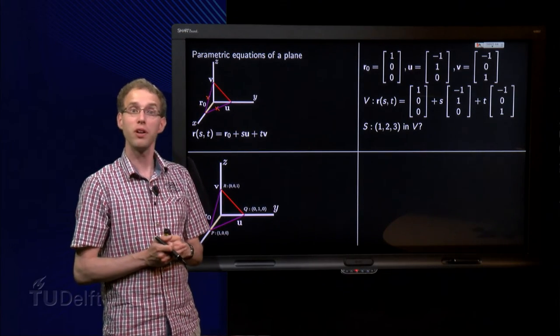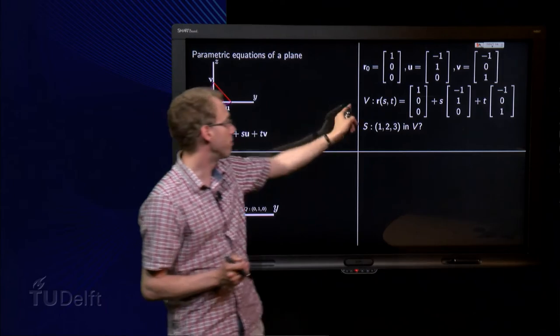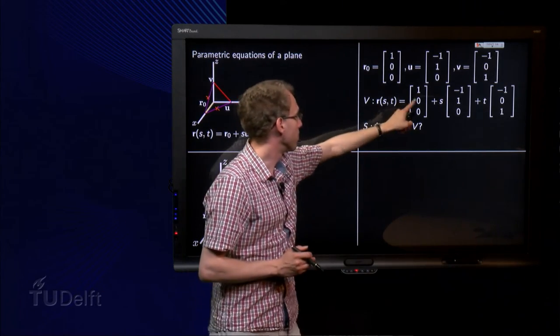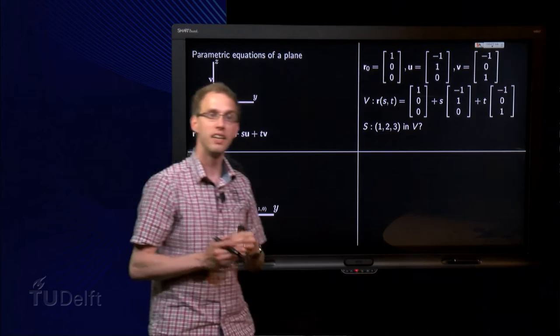And then we are done. We have our parametric equation for V, R of s and t equals R0 plus s times u plus t times v. There it is.